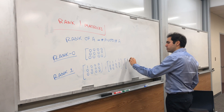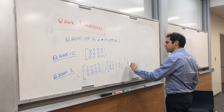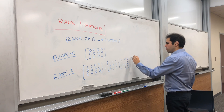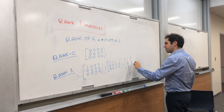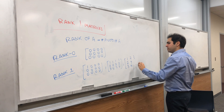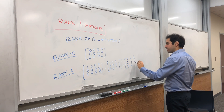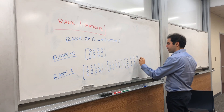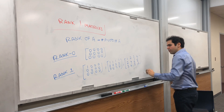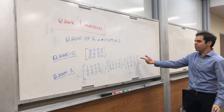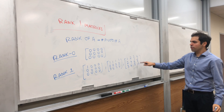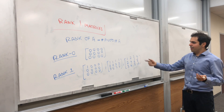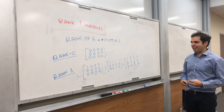But also matrices like this: 1, 2, 3 / 2, 4, 6 / 3, 6, 8 / 4, 8, 12. It turns out if you row reduce this, you can also get a matrix of rank one.